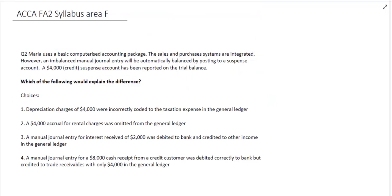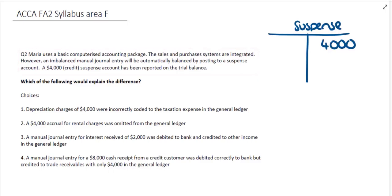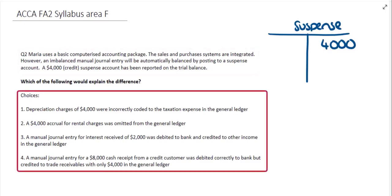Our next question asks us to choose which option would explain the difference given. Maria uses a basic computerized accounting package where sales and purchases systems are integrated. However, an imbalanced manual journal entry will be automatically balanced by posting to a suspense account. In this case, we have a $4,000 credit suspense account reported on the trial balance, and we need to decide which of the four choices will clear that suspense account.